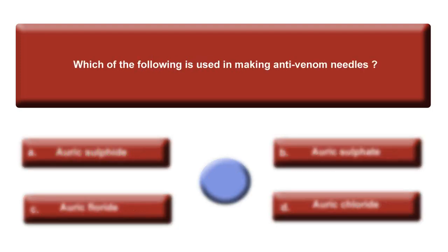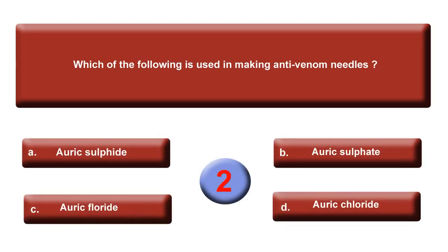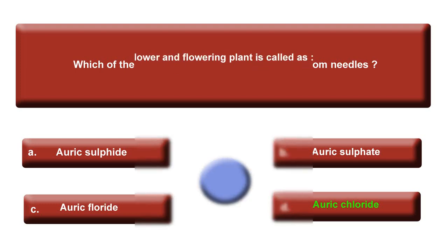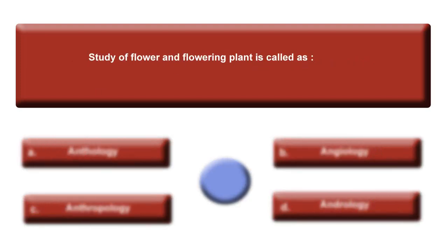Next question: Which of the following is used in making antivenom needles? Option A: Auric Sulfide. Option B: Auric Sulfate. Option C: Auric Fluoride. Option D: Auric Chloride. Such questions may be asked in SSC exams. The answer is D, Auric Chloride.